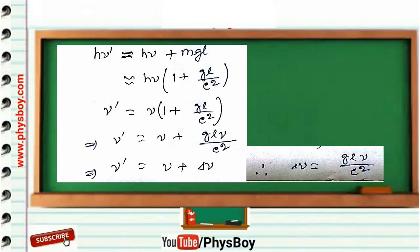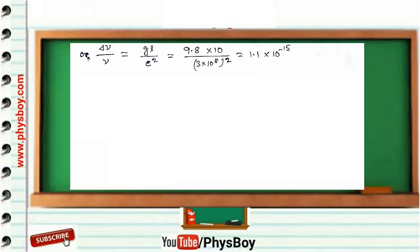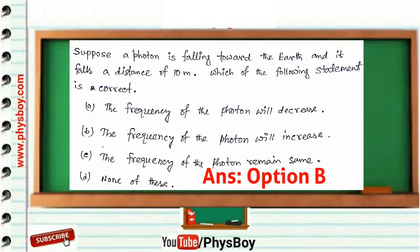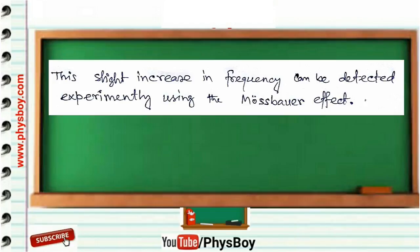The increase in frequency is Δν = gLν/c², so Δν/ν = gL/c². Putting in the values g = 9.8, L = 10, and c = 3×10⁸, we get Δν/ν = 1.1×10⁻¹⁵. So falling through 10 meters in Earth's gravitational field, the frequency increases by a factor of (1 + 1.1×10⁻¹⁵). Option B is the correct answer. This slight increase in frequency can be detected experimentally using the Mössbauer effect.